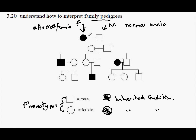These two parents show their children by this vertical line here. This person here is the daughter — it's a circle — of these two parents, and the daughter's circle is open. So she is unaffected by the inherited condition.